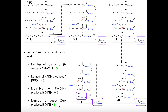The number of acetyl-CoA's produced is always equal to half the number of carbons. For a 12-carbon fatty acid, we get six acetyl-CoA's: one from each of the first four rounds, and two from the last round, because splitting the 4-carbon fatty acid always yields two acetyl-CoA's. Even though there are only five rounds of beta-oxidation, we still get six total acetyl-CoA's.